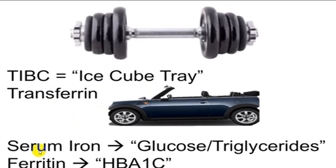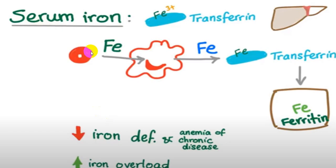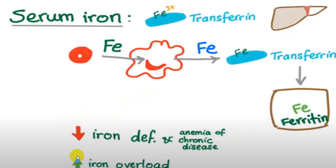The three main values are: serum iron (amount of iron in blood), ferritin (storage iron), and TIBC (transport protein calculation). Serum iron combines with transferrin to become ferritin stored in liver, bone marrow, and macrophages. If serum iron is reduced, it is classical in iron deficiency anemia and anemia of chronic disease. In iron overload, serum iron levels are elevated. This is a simple way to tell whether iron is lacking or in excess.